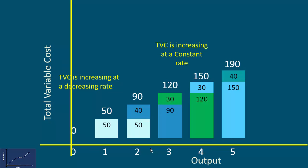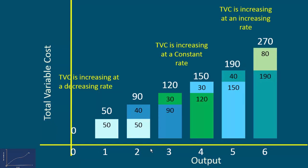270 rupees is spent by way of total variable cost to produce 6 units. Now, the rate of increase is 270 minus 190, 80 rupees. The rate keeps on going up. In the output range 4 units to 6 units, the rate is increasing. Hence, total variable cost is increasing at an increasing rate.